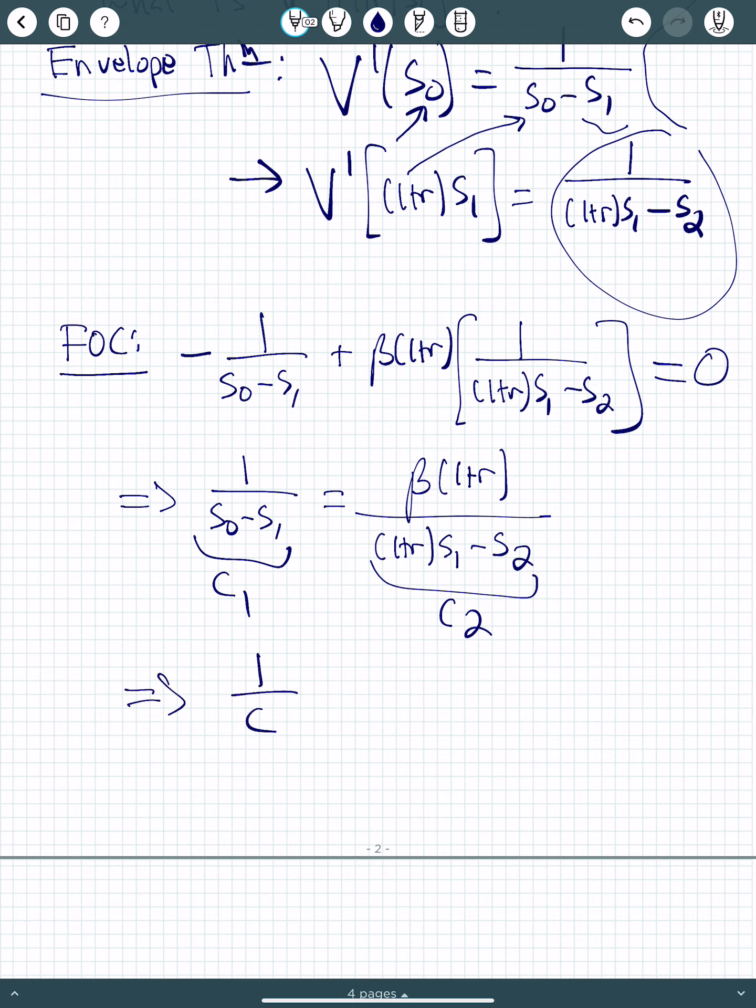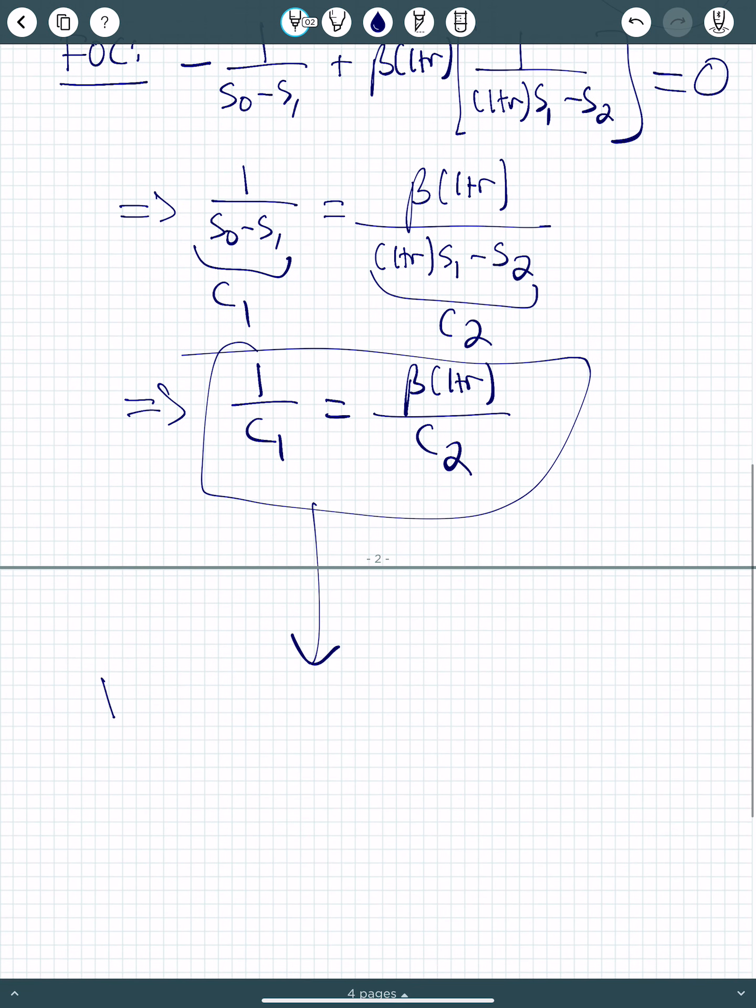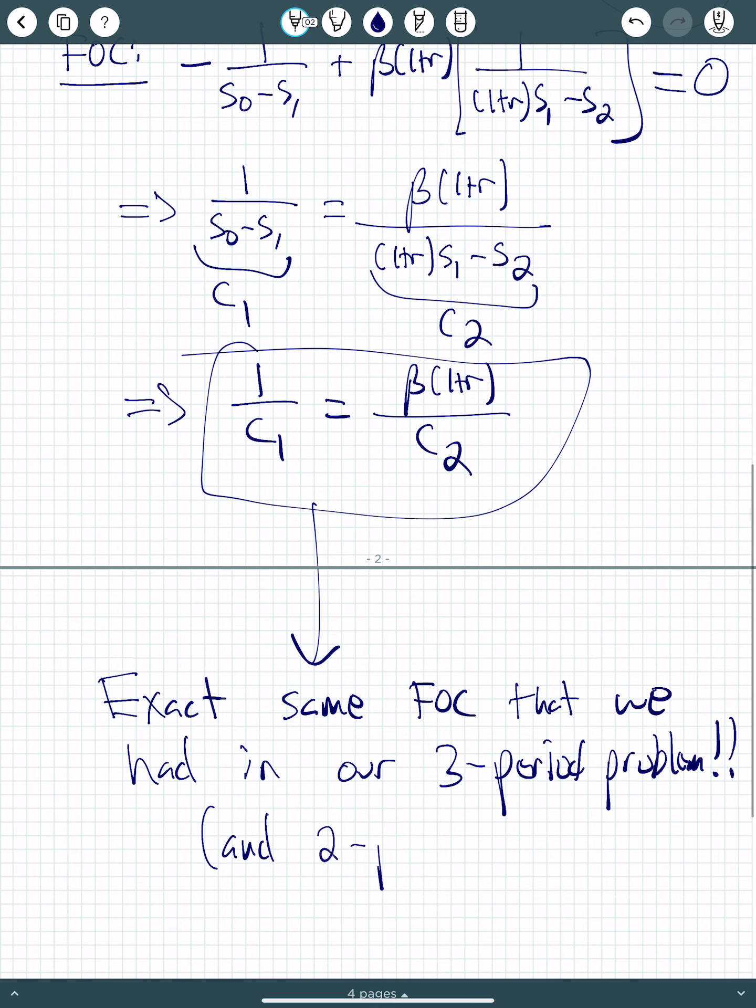It says that 1 over c1 is equal to beta 1 plus r over c2. If you go back and look, this is the exact same first order condition that we had in our 3-period problem. And in fact, our 2-period.